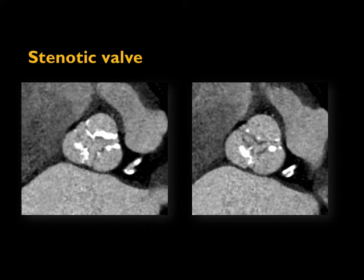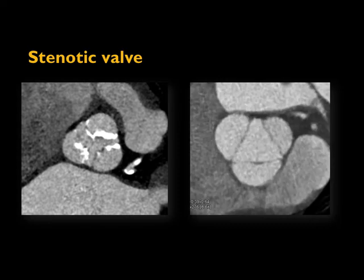Here's an example of what a stenotic valve looks like. In this patient with a stenotic valve, you can see the valve not only is calcified but also just doesn't open up as much as the normal valve we saw before. This is the problem in patients with aortic stenosis — you get a restricted opening of the valve itself.